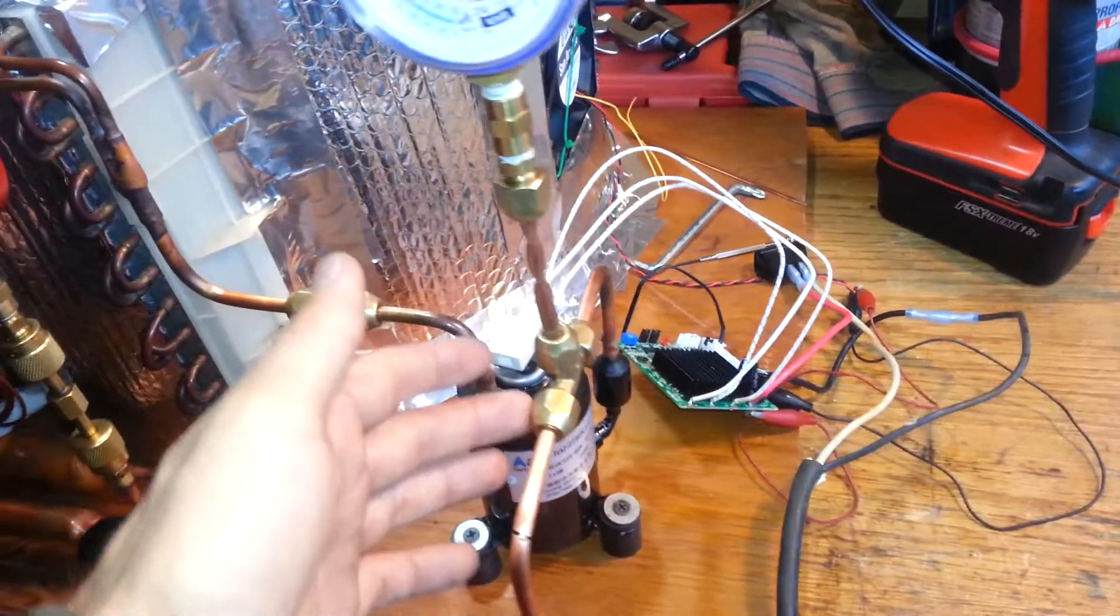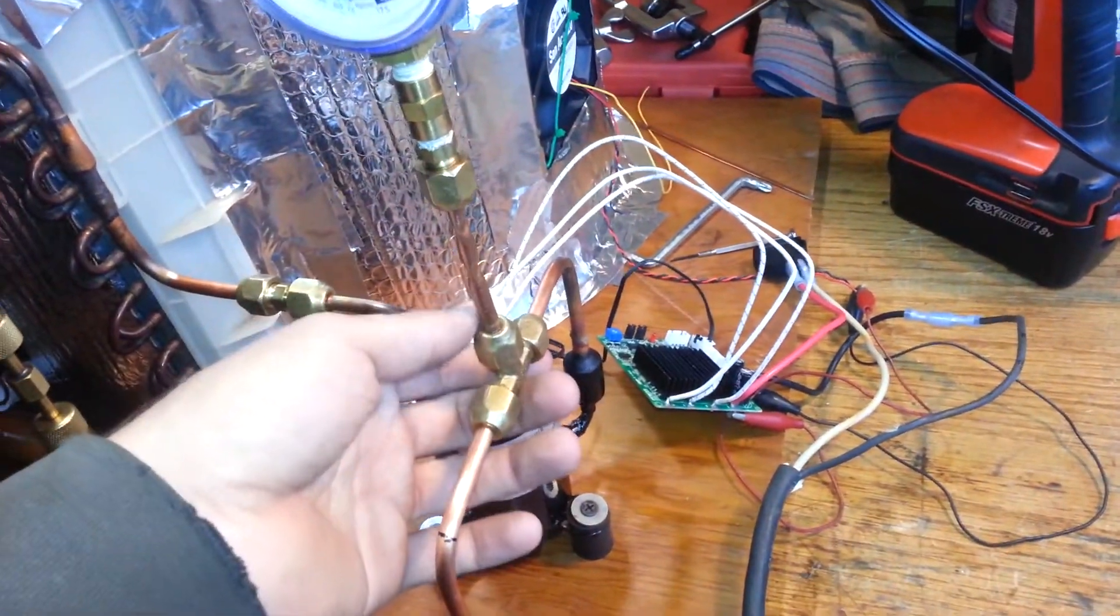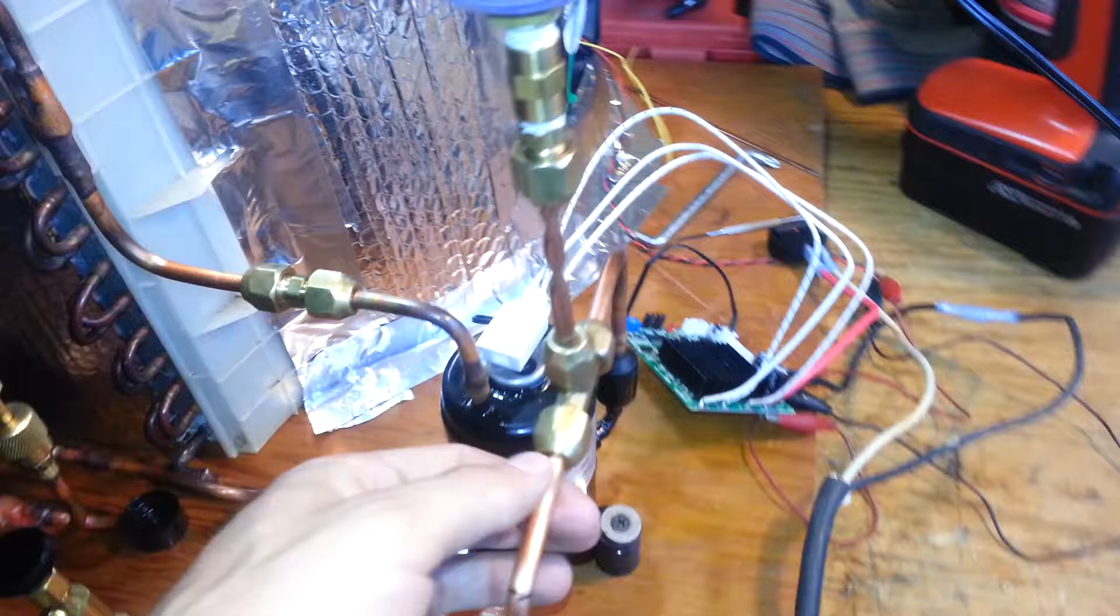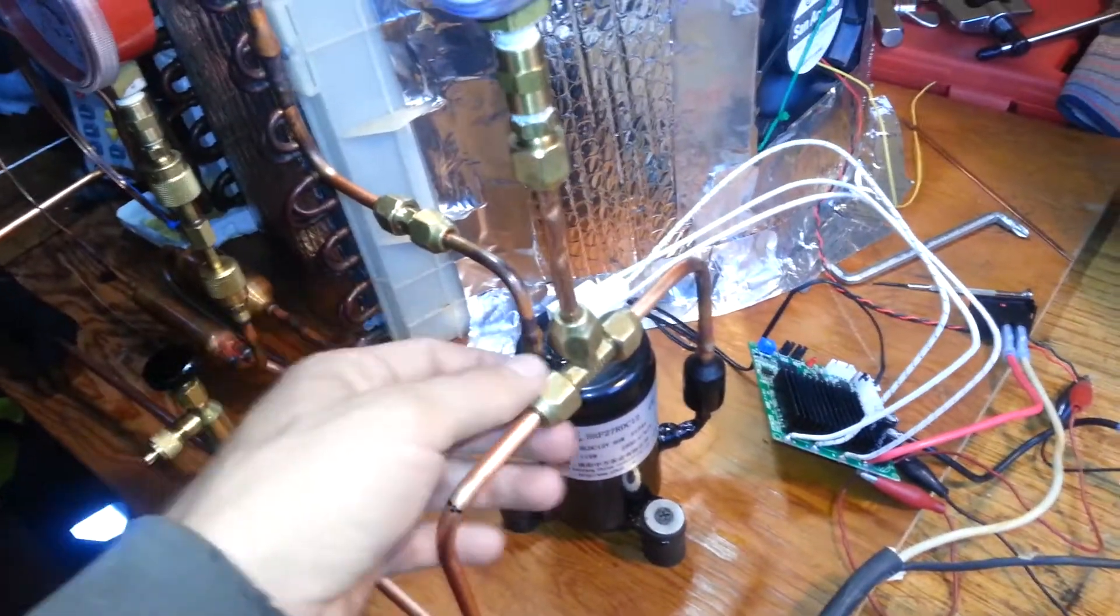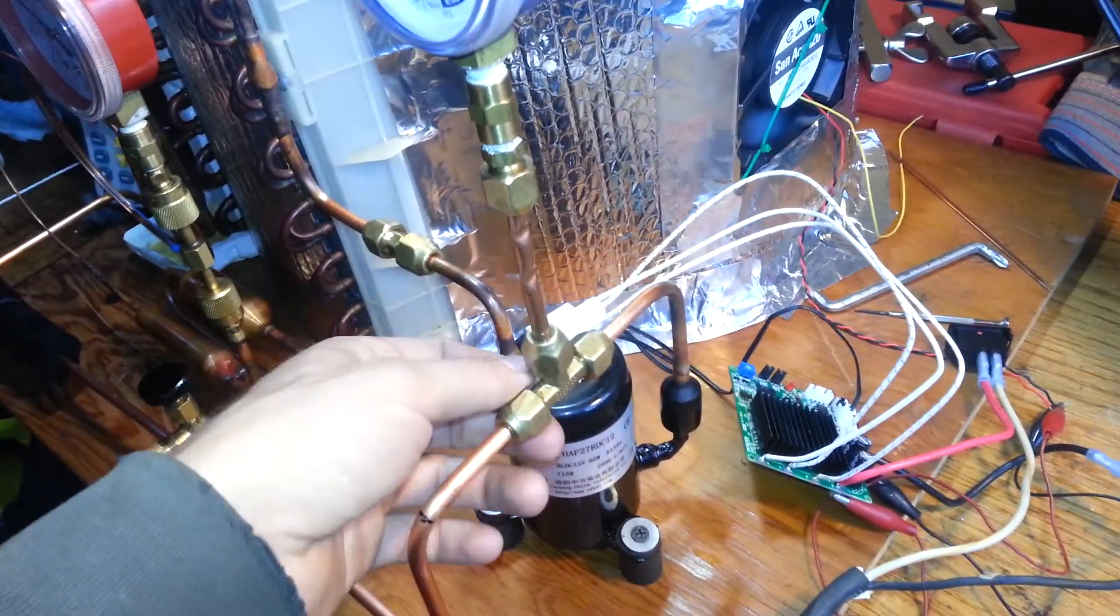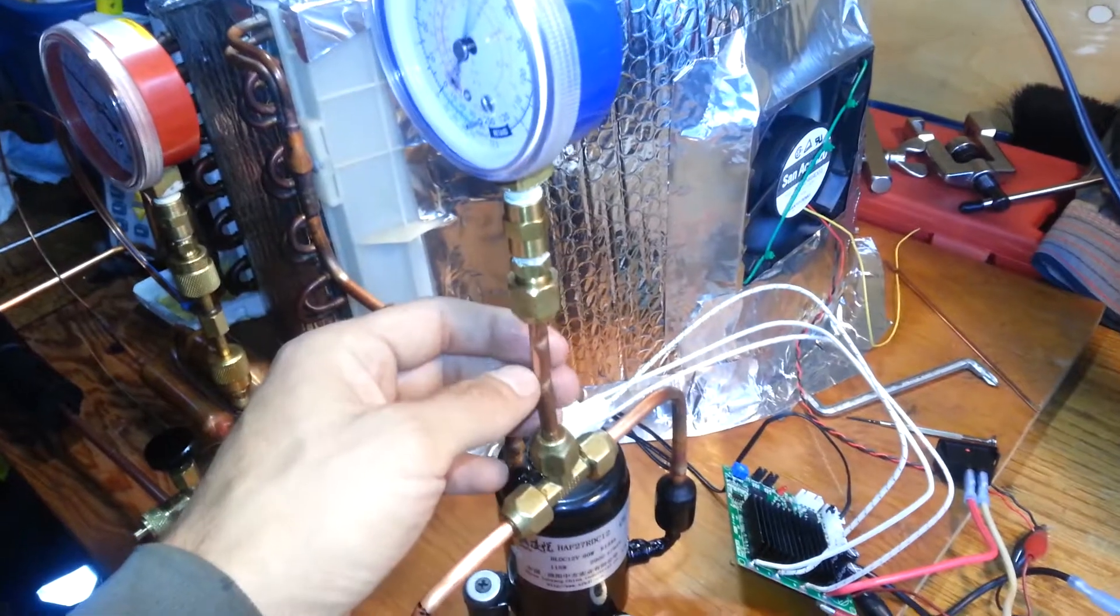That capillary tubing can be purchased online or found at a local refrigeration supply house. A lot of the fittings here are all quarter-inch flare, so you need a flaring tool to flare out the copper and buy some of these nuts. You can get a pretty good deal on eBay, or you can buy them at the hardware store. They're very expensive as you buy them at the hardware store.